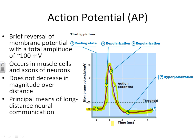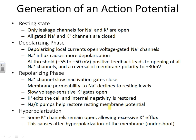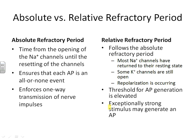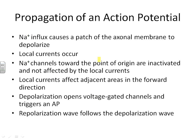Because these four steps must occur in every part of the neuron for an action potential to be complete, there are certain times when it is impossible to have another action potential, and other times when it is possible but harder. These are the absolute refractory period and the relative refractory period — that's where we're headed with this.